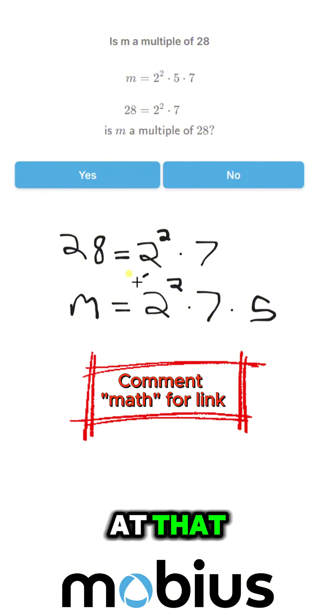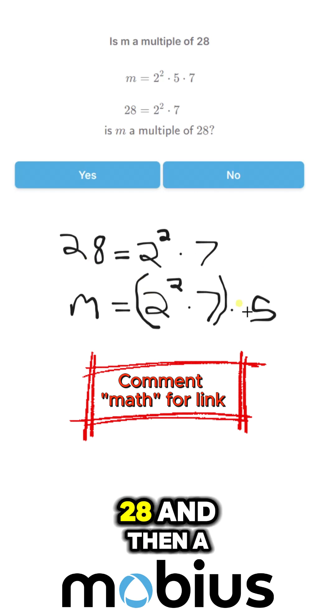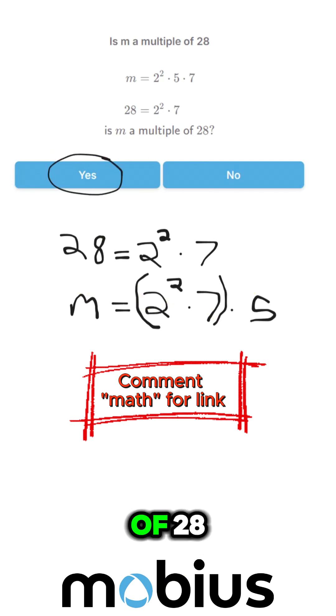If we look at that and put a little bracket around these ones here, you can see that is 28. If m has all the factors of 28 and then a few more, then it must be a multiple of it. It is five times 28. So our answer: yes, m is a multiple of 28.